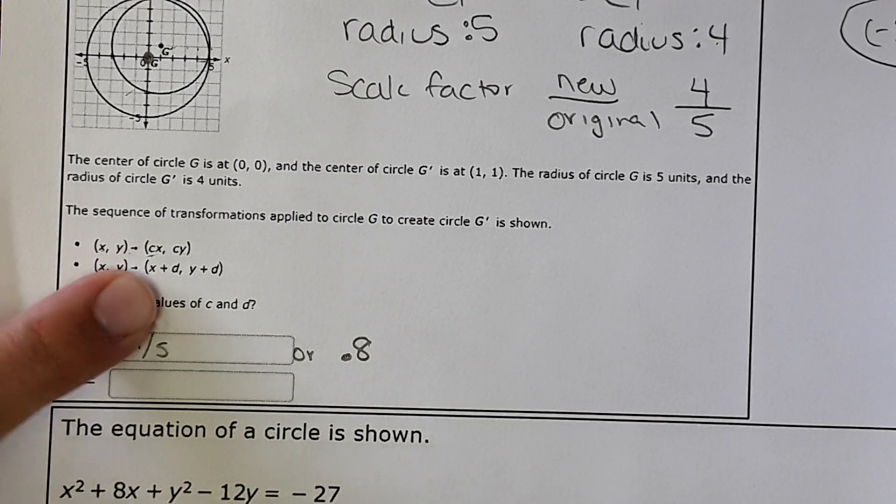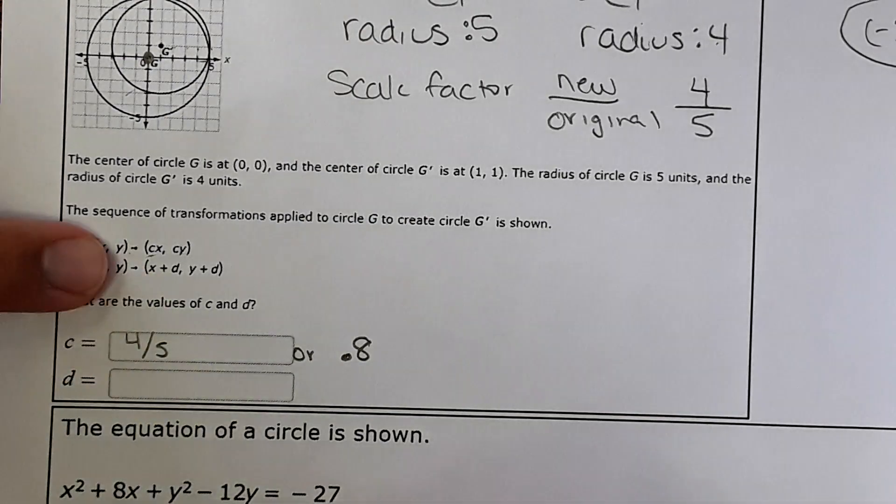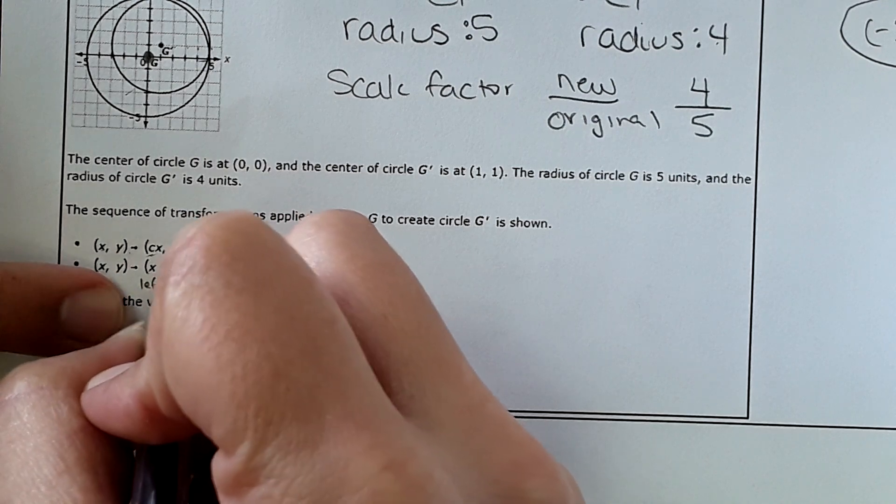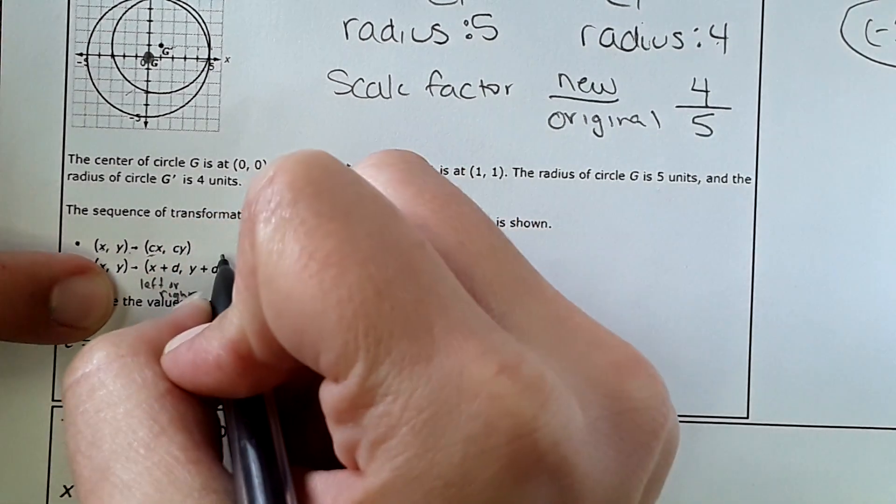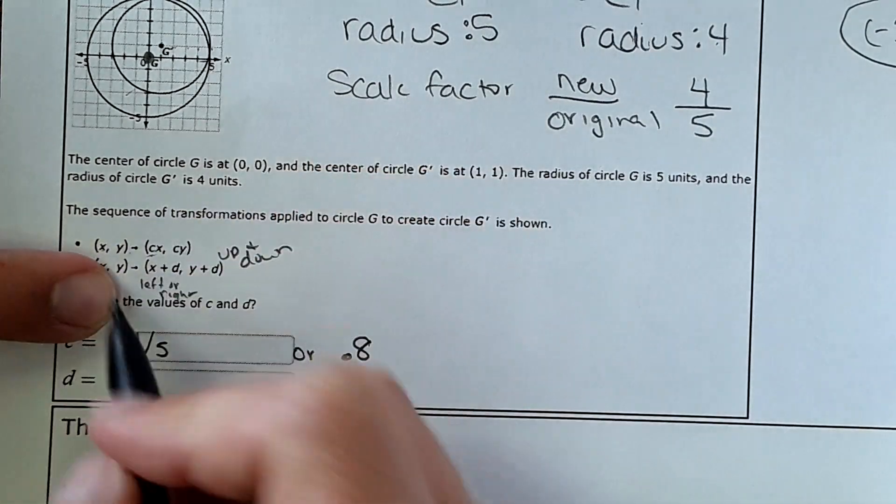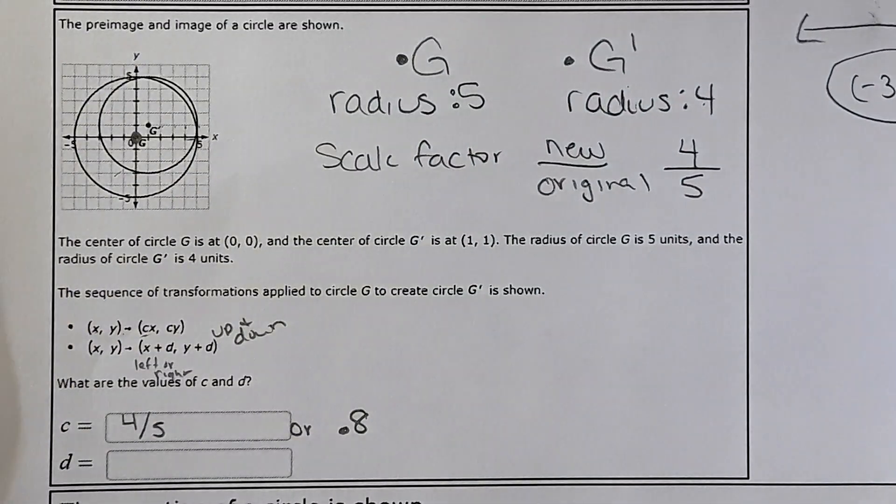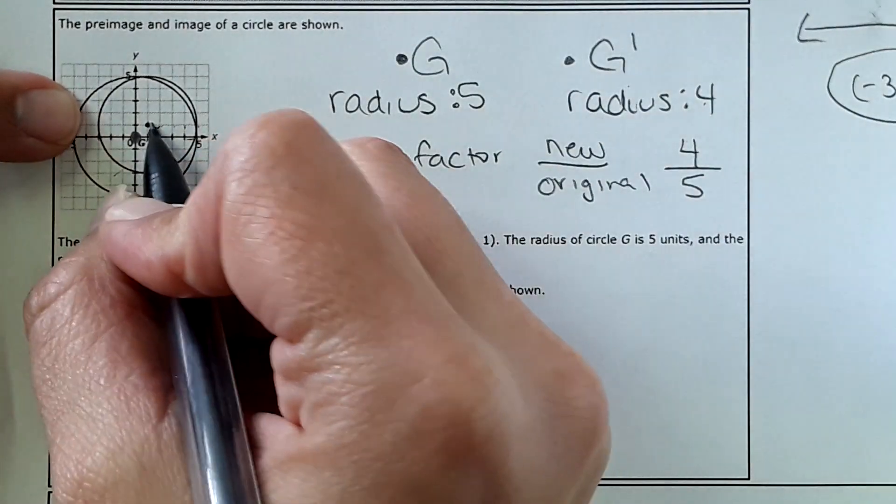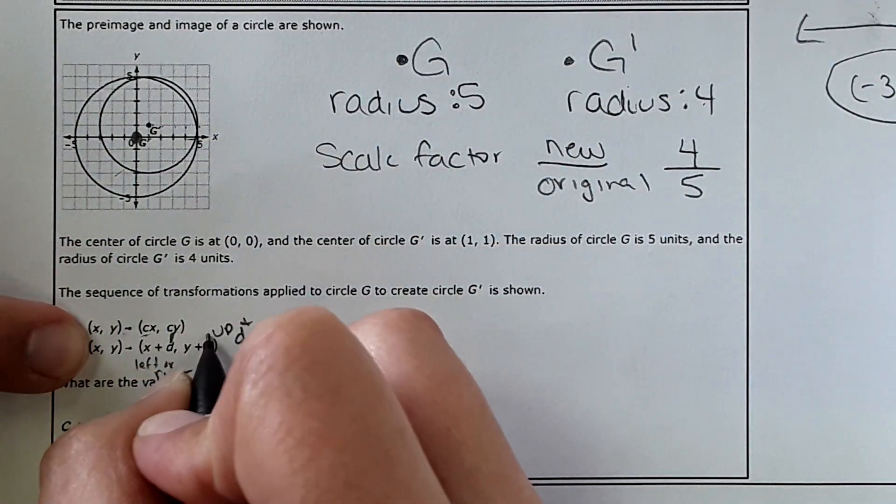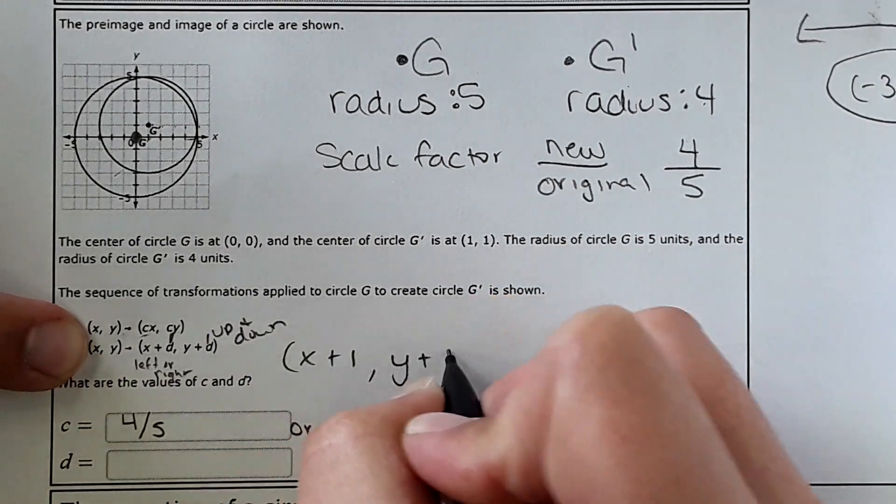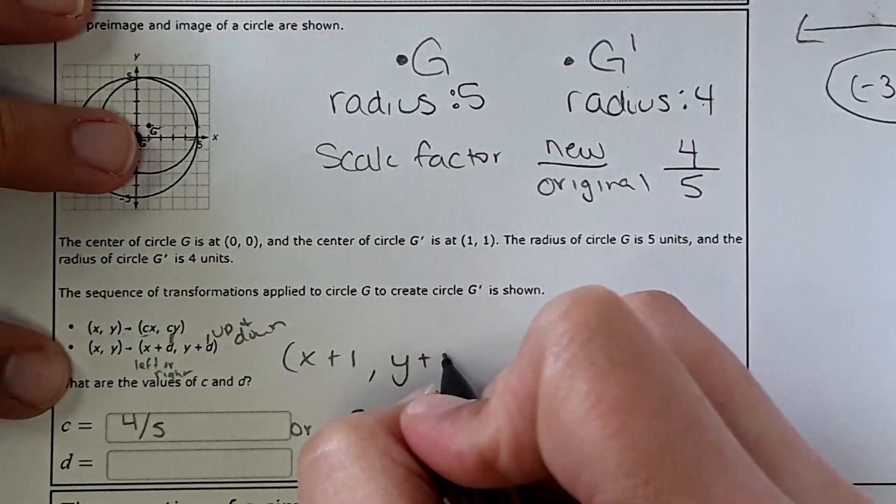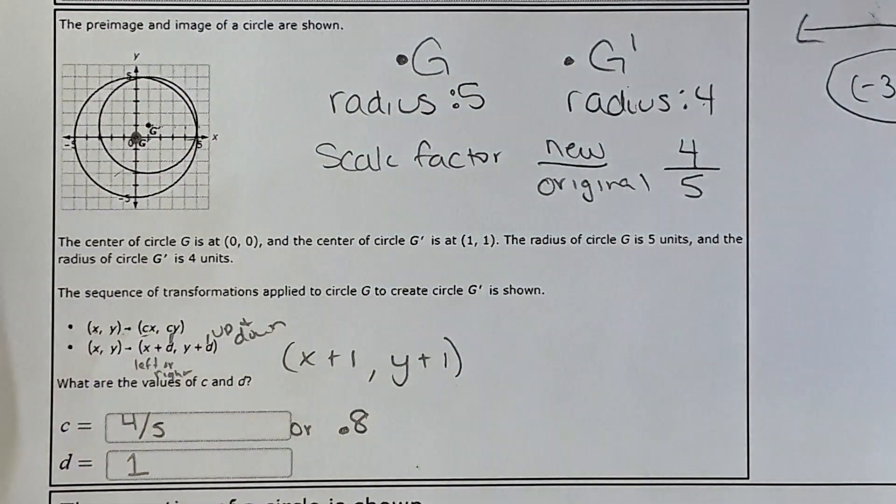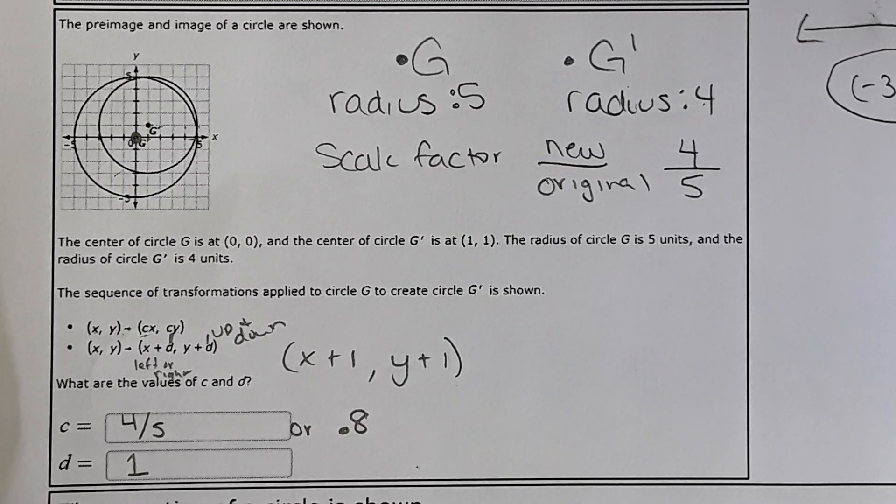And then for this one, it's showing a translation. So remember here, it's like left to right, and then this is up and down. So for the X value, we're moving to the right one and then up one. So it's X plus 1, Y plus 1. So therefore, D is just 1.